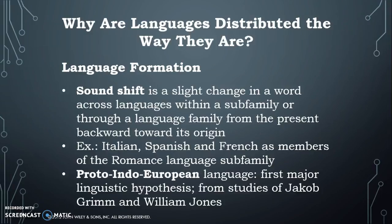One of the first ways we talk about how languages are formed is sound shift — a slight change in a word across languages, within a subfamily, or throughout a language family. We can trace those sound shifts backwards in time toward a language's origin. For example, Italian, Spanish and French are members of the Romance language family, which means they trace their origins to Latin. The word for 'eight' is 'otto' in Italian, 'ocho' in Spanish — very similar — and linguists trace these sound shifts across space and time to work backward and determine what the original language was.